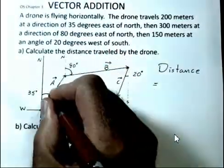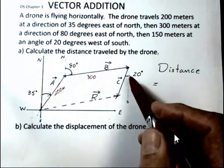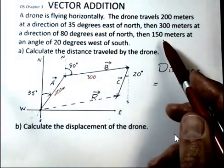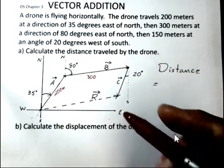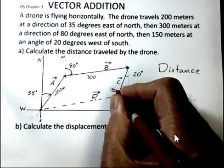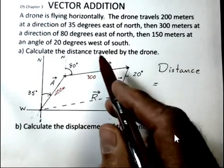So that's an angle here. And finally, we have the last leg, 150 meters, at an angle of 20 degrees west of south.